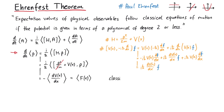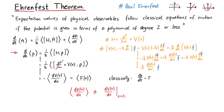This also looks like the classical equation of motion for the momentum. However, there is one slight problem. In general, the expectation value of the derivative of the potential is not the same as the derivative of the potential evaluated at the expectation value of x. While the first expression is the result of our calculations, only the second one should be compared to classical mechanics.